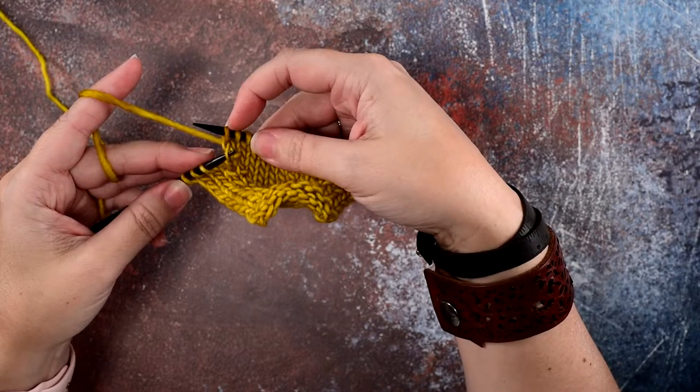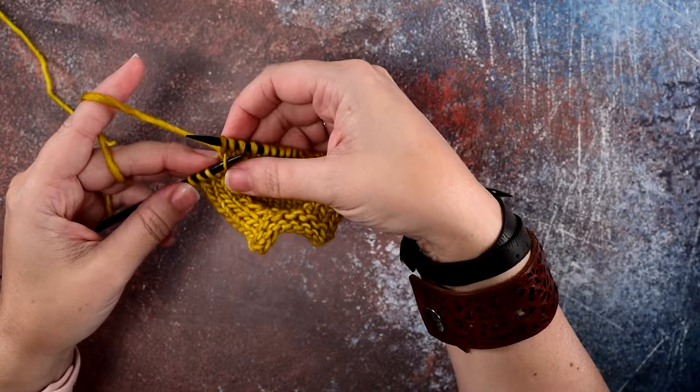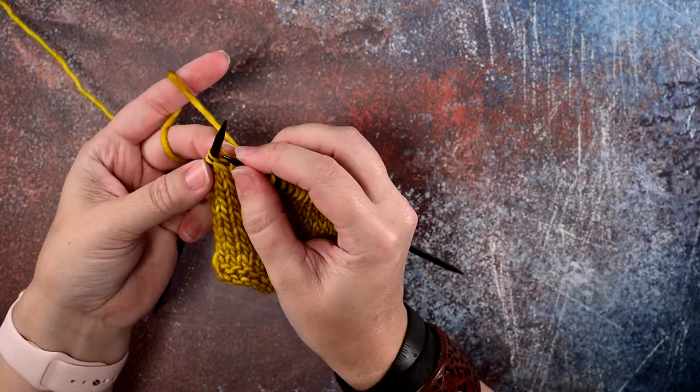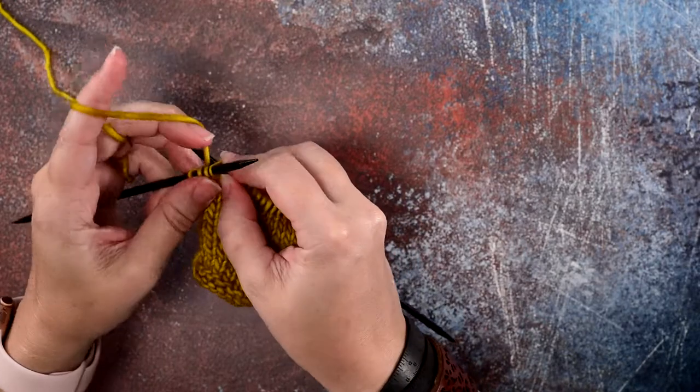So one row underneath the stitch on our needle, we're going to go in from left to right into that right bar, lift that up, and then we're going to knit into the back loop of that stitch as you normally would.